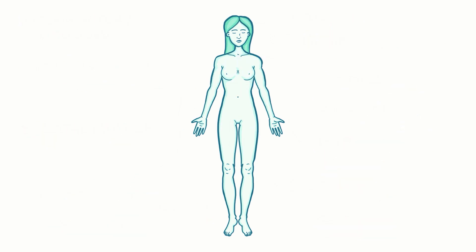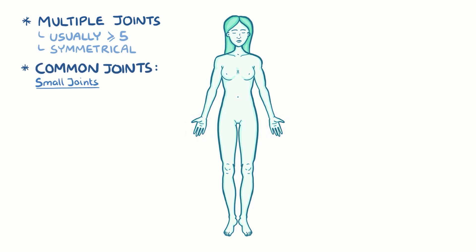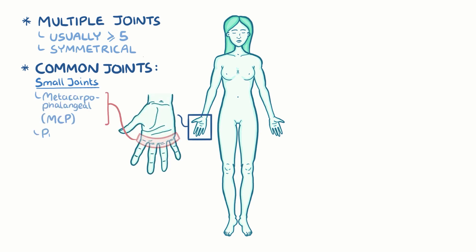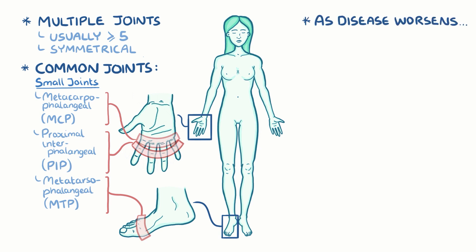Rheumatoid arthritis typically involves multiple joints — usually five or more — symmetrically, meaning the same joint groups on both sides of the body, like both hands. Commonly affected joints are the small joints, like the metacarpophalangeal joints and proximal interphalangeal joints of the hand, and the metatarsophalangeal joints of the feet. As the disease worsens, it can start to affect large joints, like the shoulders, elbows, knees and ankles.